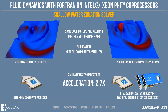The most important aspect of this demonstration is that the executable for the CPU and the executable for the Intel Xeon Phi coprocessors were compiled from exactly the same source code. This code is written in Fortran with OpenMP and MPI and is optimized for parallel architectures.